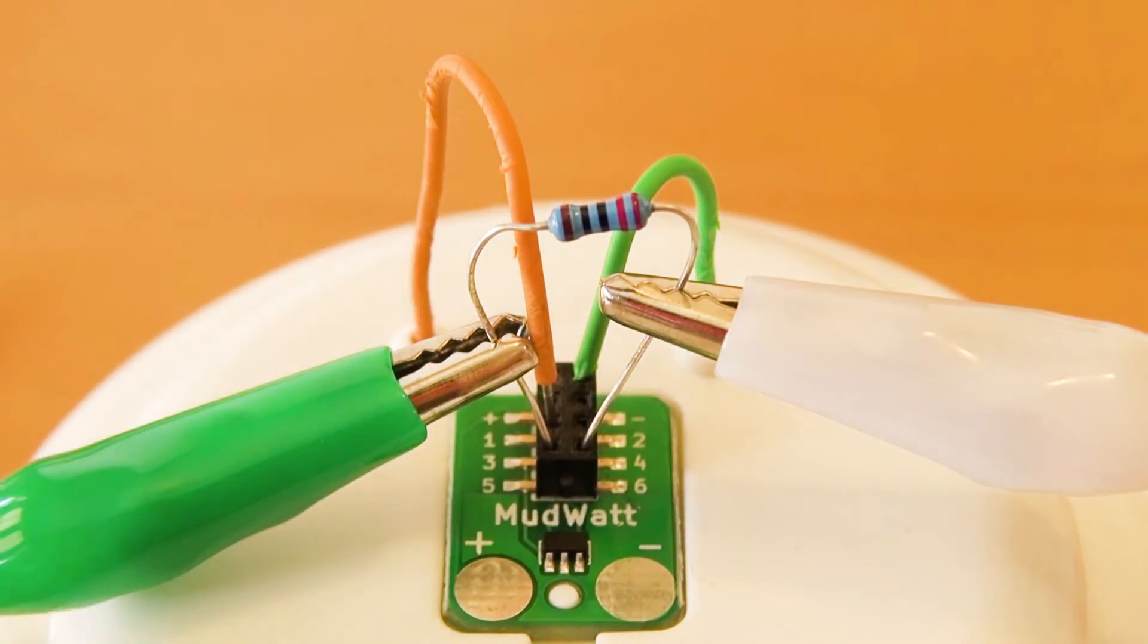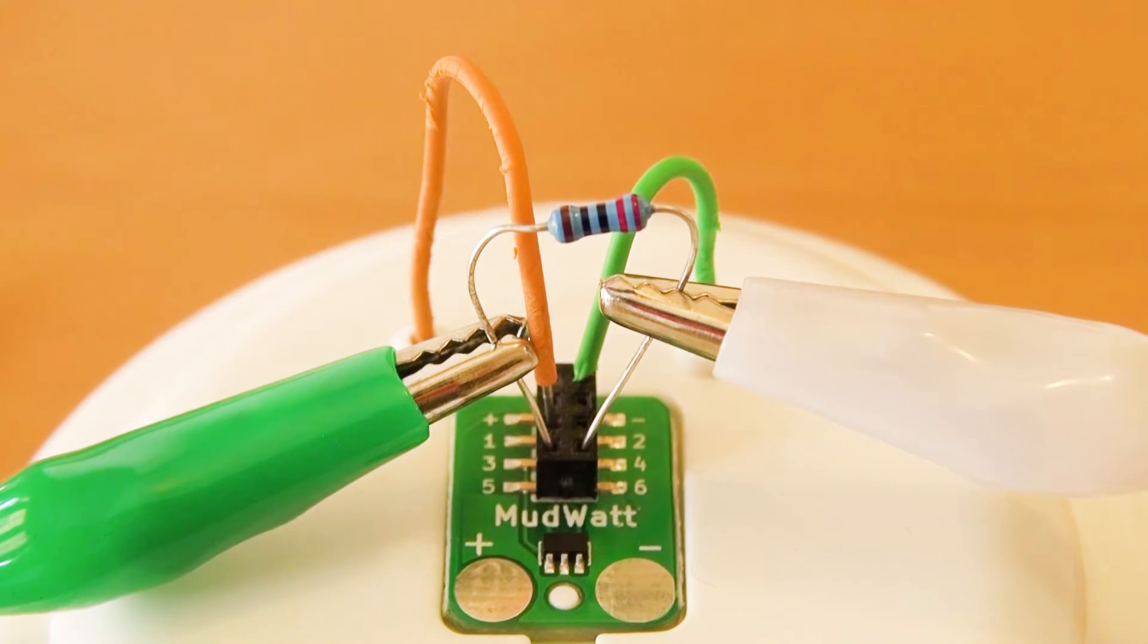Wait for 5 minutes and then read the voltage measurement on your multimeter. If you get a negative voltage reading, reverse the two alligator clip cables that you attach to the resistor.